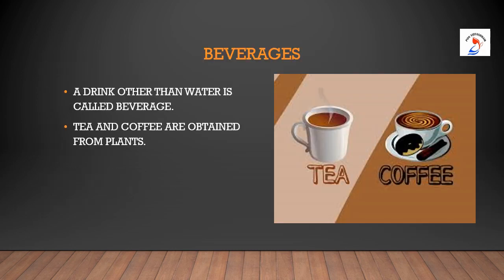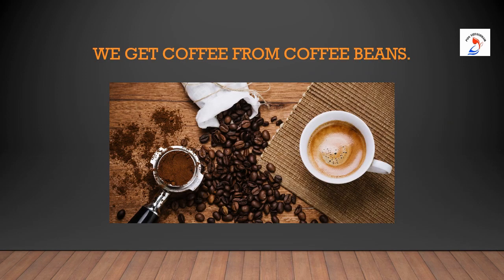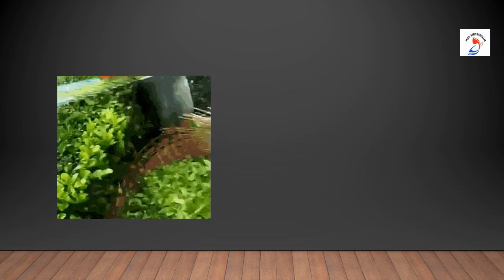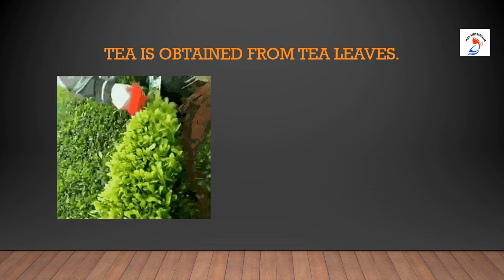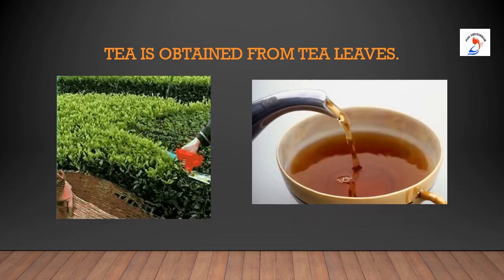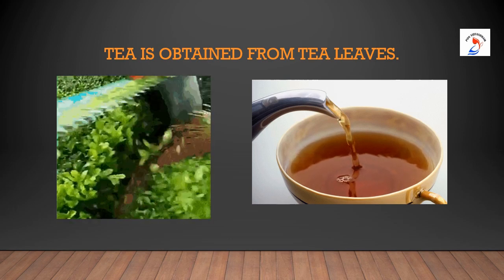Then come the beverages. What is a beverage children? A drink other than water is called a beverage. Tea and coffee are obtained from plants. We get coffee from coffee beans, which are extracted from coffee plants. These beans are first dried and crushed to make coffee powder, which is used to make coffee at home. Tea is obtained from tea leaves. The leaves of tea plants are dried, crushed, fermented and dried again to prepare tea.